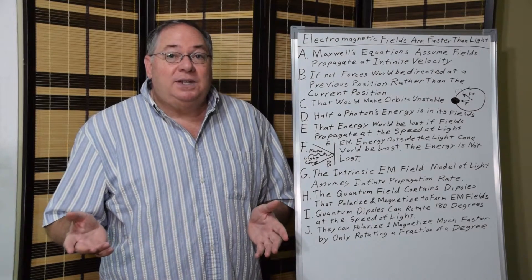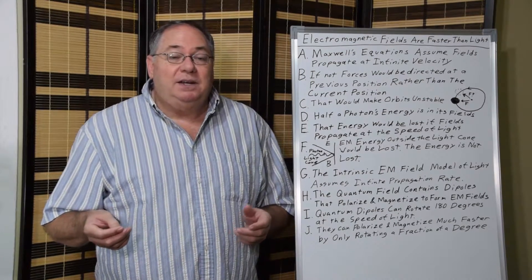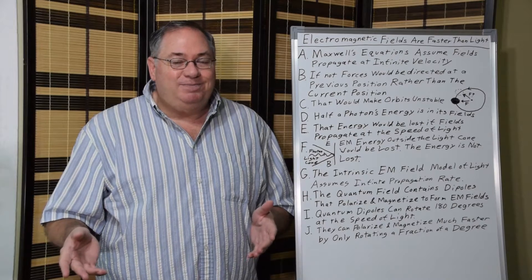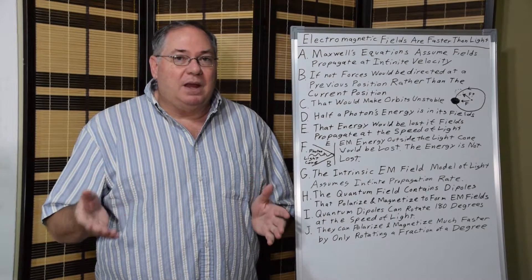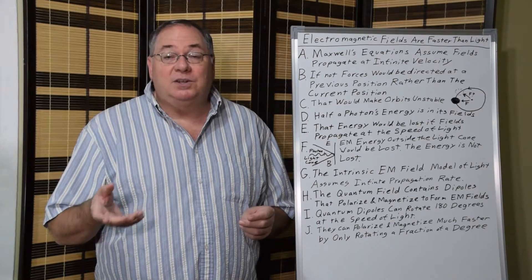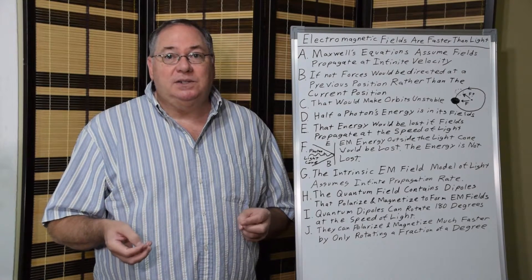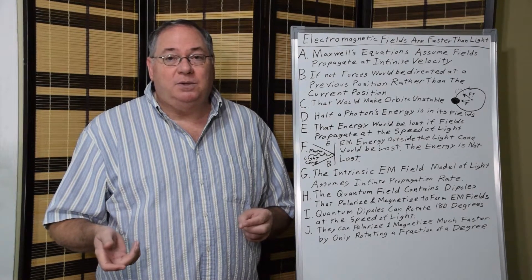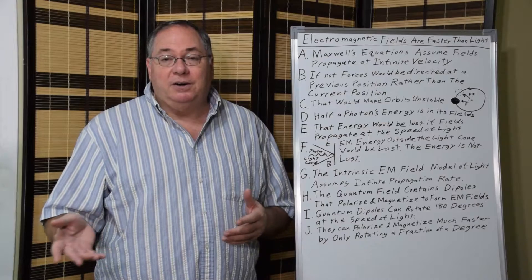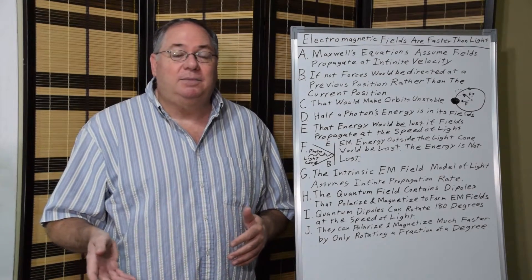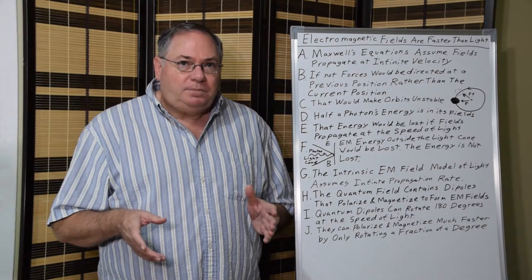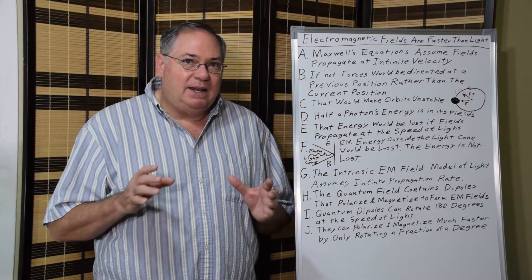Now, how do electric and magnetic fields propagate faster than light? Well, that's fairly simple to understand. If we look at the quantum field model, where we assume that the quantum field is filled with quantum fluctuations, and those quantum fluctuations are dipoles, electric charge dipoles. We typically use a particle pair model, where it could be any real pair of particles, like an electron-positron pair, as the prototypical example. And the Casimir effect confirms this.